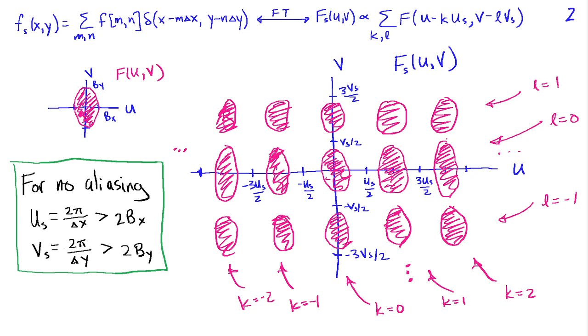Just as we had before, there's a condition under which we don't have aliasing—in other words, when these replicated spectra don't overlap. For that to be true, the bandwidth b sub x and b sub y need to be smaller than half of the spacing between these replicates, and that's u sub s and v sub s. The condition for no aliasing is that u sub s, which is 2 pi divided by delta x, has to exceed twice the bandwidth in the x direction. And the sampling frequency v sub s in the y direction, which is 2 pi over delta y, has to exceed twice the bandwidth in that direction. That will prevent any aliasing.